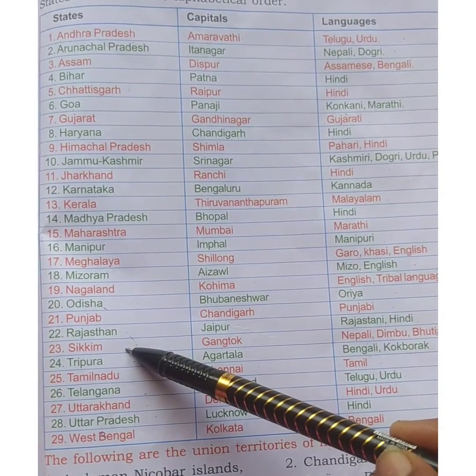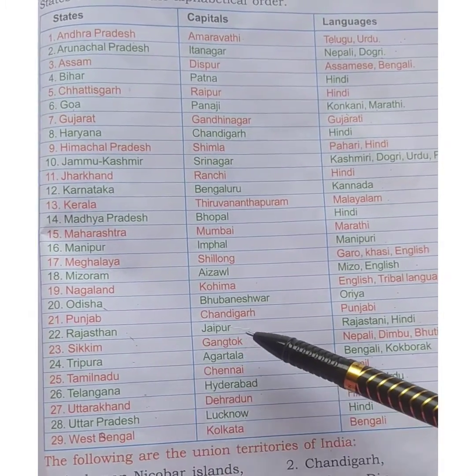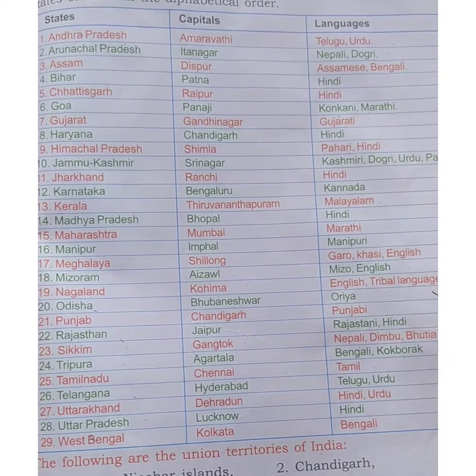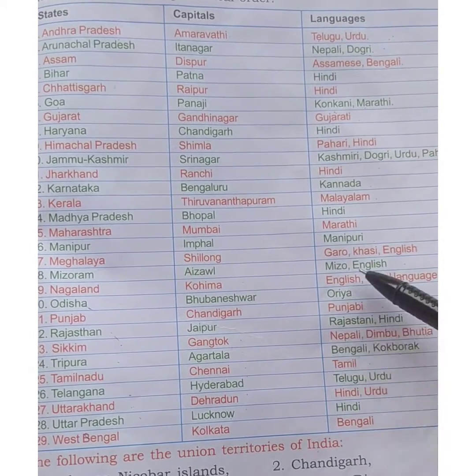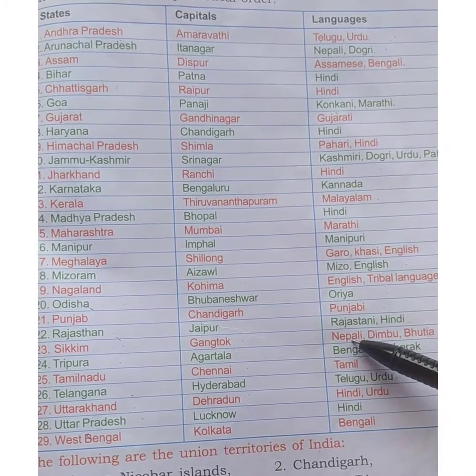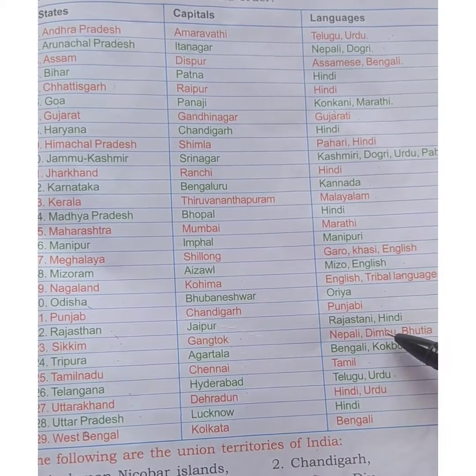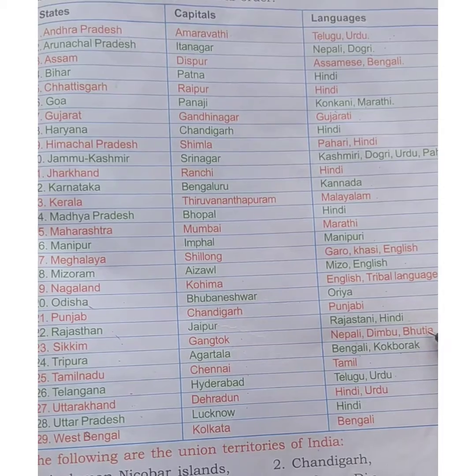Next is Sikkim. The capital is Gangtok. The languages spoken are Nepali, Limboo, and Bhutia.